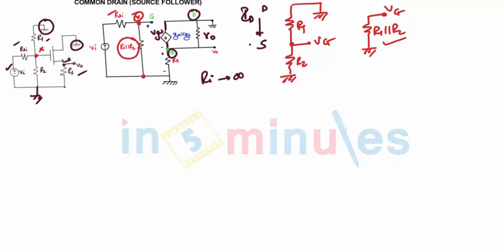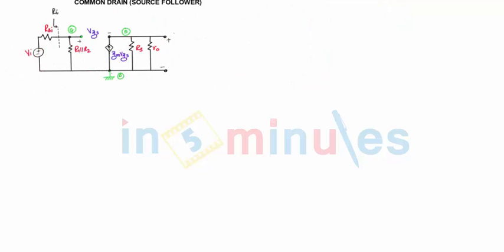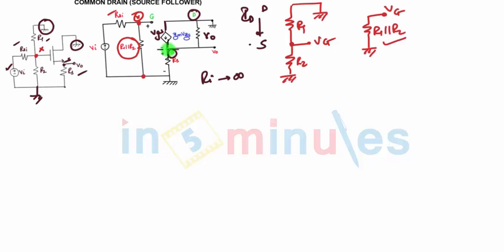Now our aim is to find the gain, Ri, Ro, right. So what you can say, this circuit can be more simplified as this. You have R1 parallel to R2, and you can say over here RS is connected between source and ground.